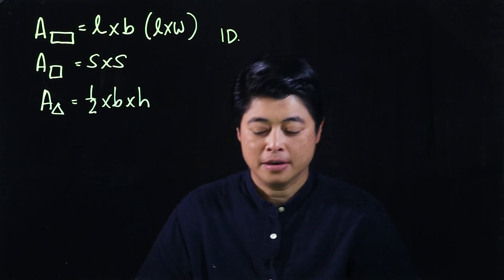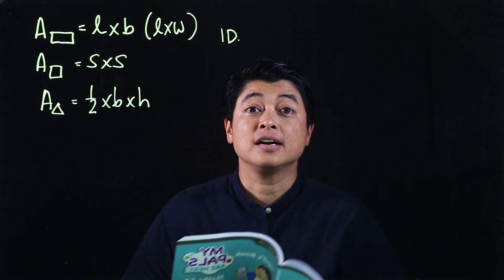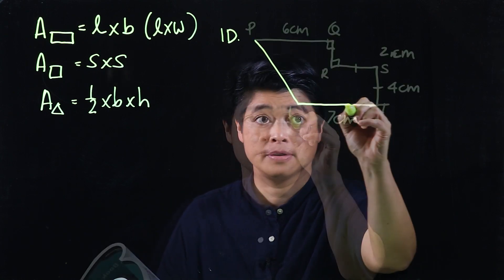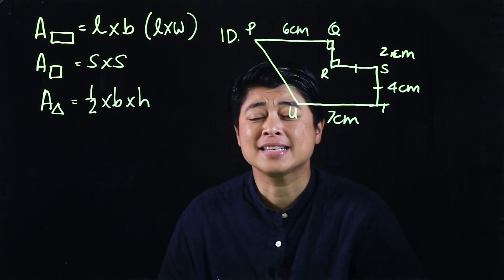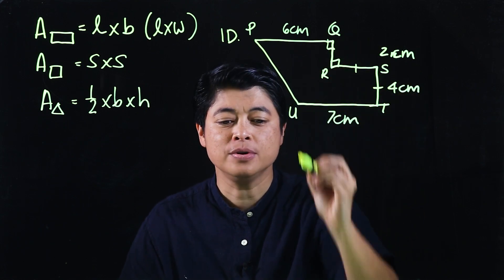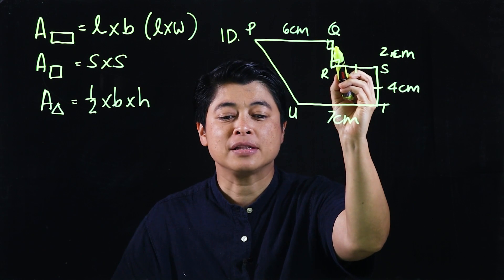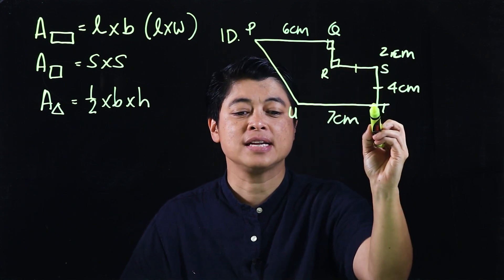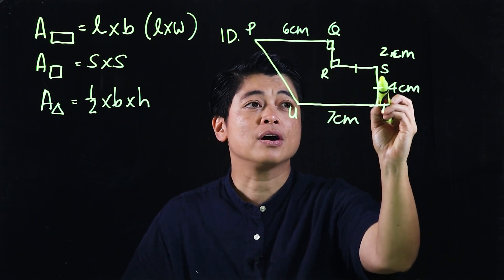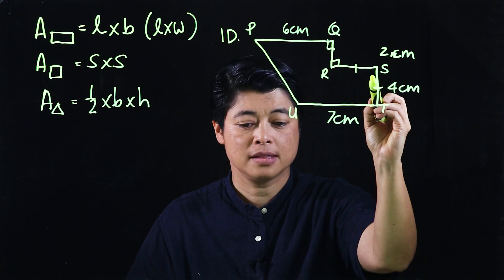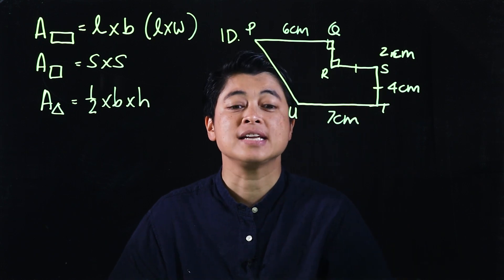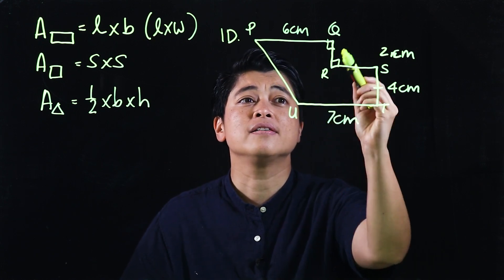On to page 114, another problem I will be discussing is 1D. In the figure PQRSTU, PQ is 6 centimeters, UT is 7 centimeters, QR is 2 centimeters, and RT and RS and ST are equal at 4 centimeters each. Find the area of the figure.